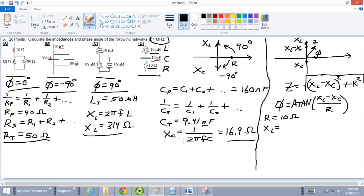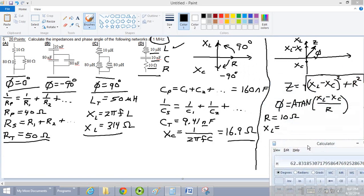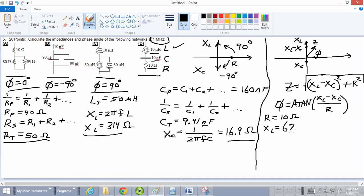XL is going to be, it's the same formula. 2 pi F times L, except now L is 10 microhenries. We can go back to our calculator. 2 times pi times 1E6 times 10 microhenries. 10E negative 6. That's micro is negative 6. Negative 6 power. Equals. So I got 62.8. Now, I got ahead of myself a little bit. 62.8 ohms for XL.